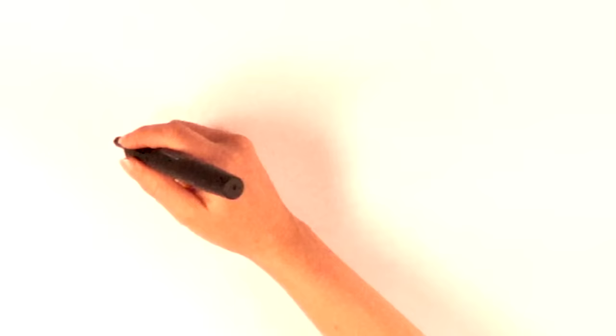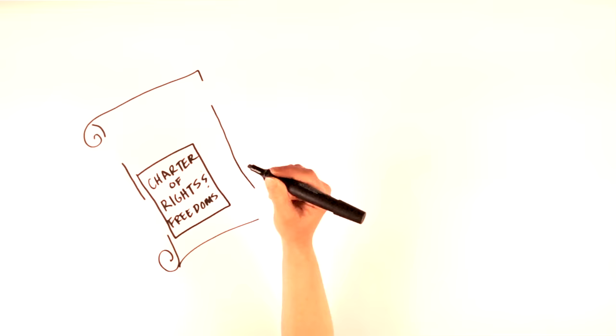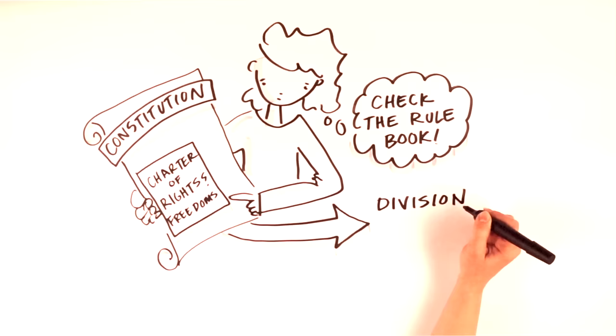In Canada, our rights and freedoms are protected by a document called the Charter. It's part of a larger document called the Constitution, which is something like a rule book that lays out how powers are divided among levels of government, the courts, and other institutions.